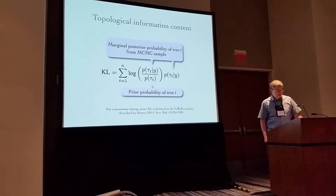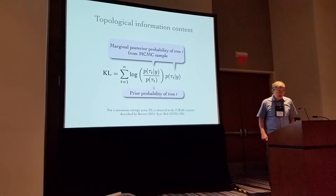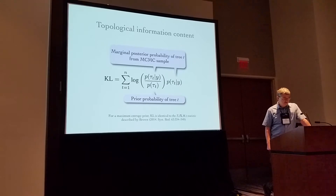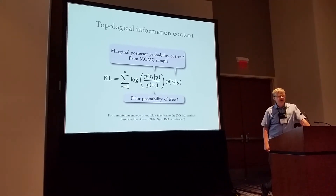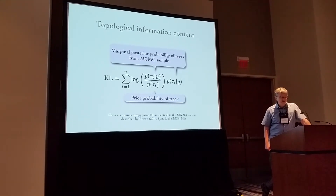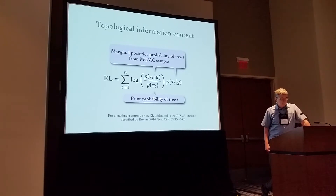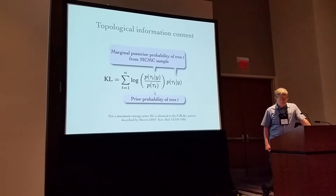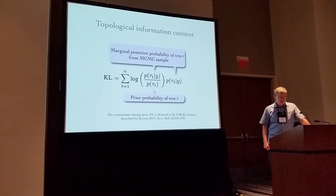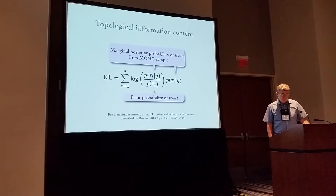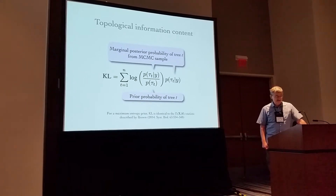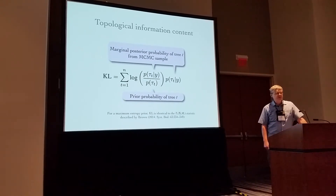KL could be useful in the continuous case, but today I want to focus on the discrete version of KL used in measuring information specifically about tree topologies. The calculation involves the marginal posterior probability and the corresponding prior probability of each possible tree topology. The value of n, which is the number of possible tree topologies, can be quite huge, but the calculation is manageable because only tree topologies that were actually sampled contribute to the sum.